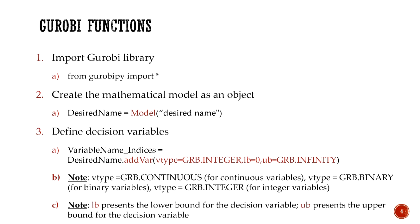Then we have access to all functions defined under the GurobiPy library. Then we create a mathematical model as an object — we define a variable name like the desired name and then use the reserved word 'model' to create that model. Now that we created the model as an object, we can assign different attributes: variables, constraints, and objective functions would each be an attribute of that object.